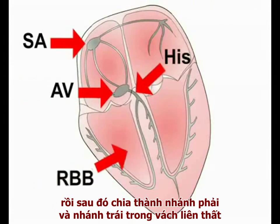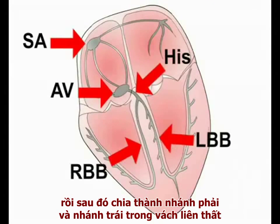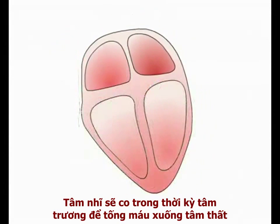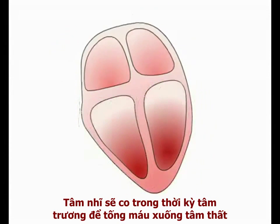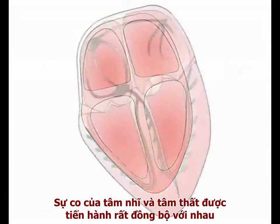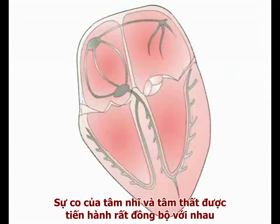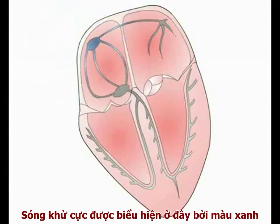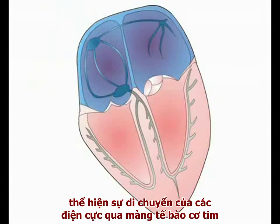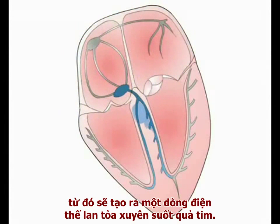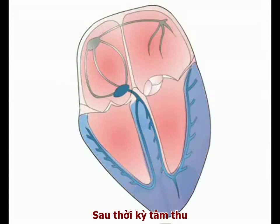The bundle of Hiss then divides into the right and left bundle branches in the interventricular septum. During each cardiac cycle, the atria contract in diastole to fill the ventricles, which then contract during systole to supply blood to the lungs and the systemic circulation. Contraction of the atria and ventricles is tightly coordinated by a wave of depolarization spreading through the muscular walls of these chambers. The depolarization wave, seen here in blue, reflects movement of charge across myocyte membranes, and is in effect an electrical current spreading through the heart.